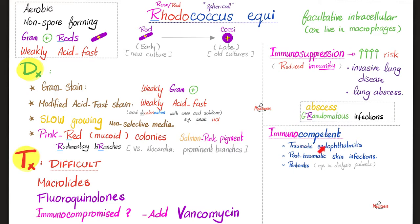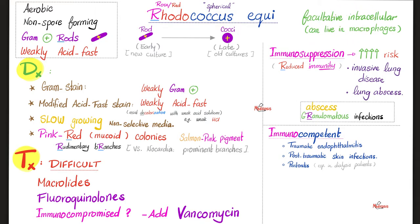Even if you are immunocompetent, you can still get a Rhodococcus infection, namely traumatic endophthalmitis, post-traumatic skin infections, and peritonitis, especially if you are a long-term dialysis patient. Treatment of Rhodococcus is very difficult. The medications doctors use usually include macrolides and fluoroquinolones, and if you're immunocompromised, we add vancomycin — because it has excellent entry into macrophages to kill the bacteria living inside.